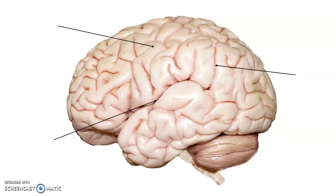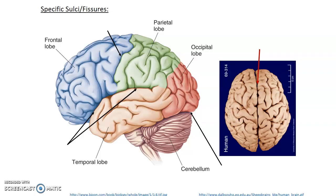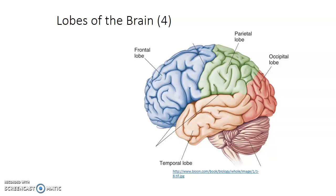The arrows are indicating the different external parts of the brain's surface. We have the gyri, which are the ridges, and the grooves, which are the sulci. We have the Sylvian lateral fissure, which is deep. That pictorial presentation shows the parietal lobe in green and the frontal lobe in blue, separated by the central sulcus. Posteriorly, the pink portion is the occipital lobe, and below the lateral fissure is the temporal lobe. The cerebellum is separated from the cerebrum by the transverse fissure, and the longitudinal fissure separates the left from the right hemisphere.